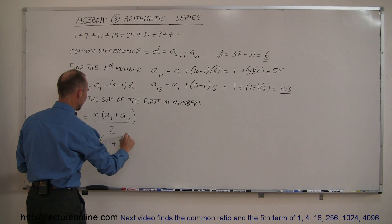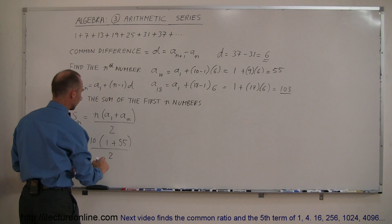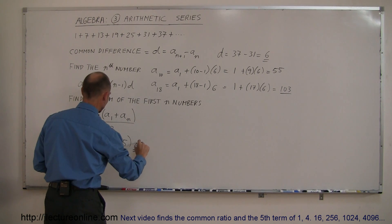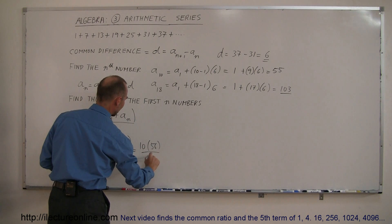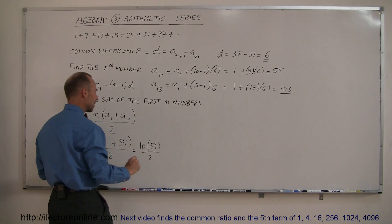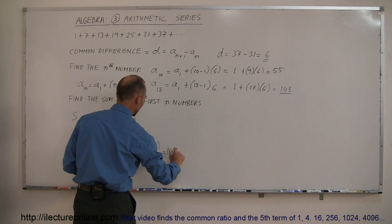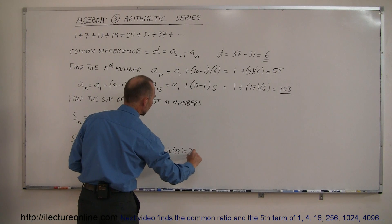So this is plus 55, the whole thing divided by 2. Of course, 1 plus 55, that's 56, so 10 times 56, divided by 2. 2 goes into 56, 28 times, so this is equal to 10 times 28, which is 280.